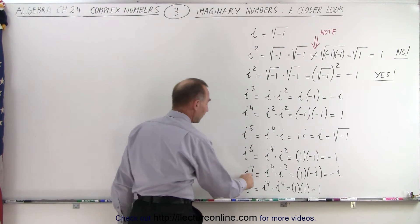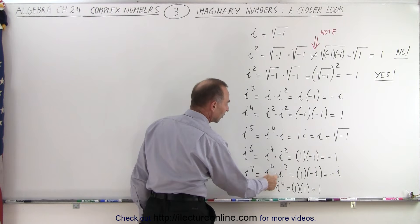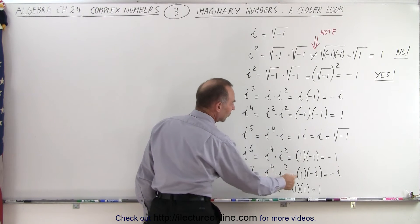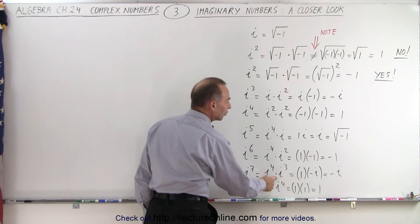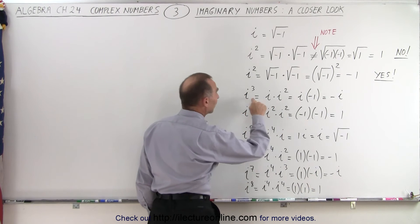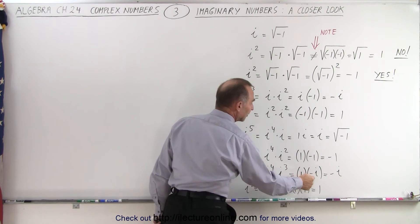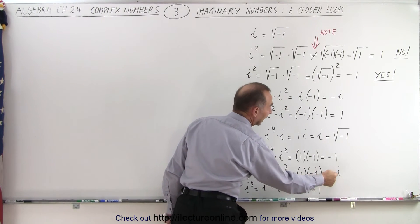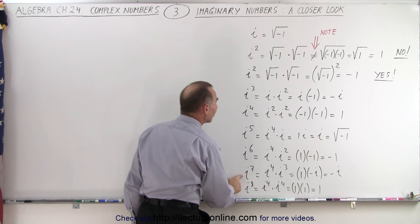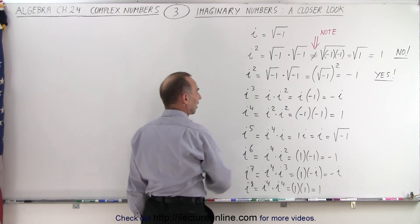i to the seventh can be written as i to the fourth times i cubed. Since i to the fourth is 1 and i cubed is negative i, then negative i times 1 equals negative i. So i to the seventh is exactly the same as i cubed.